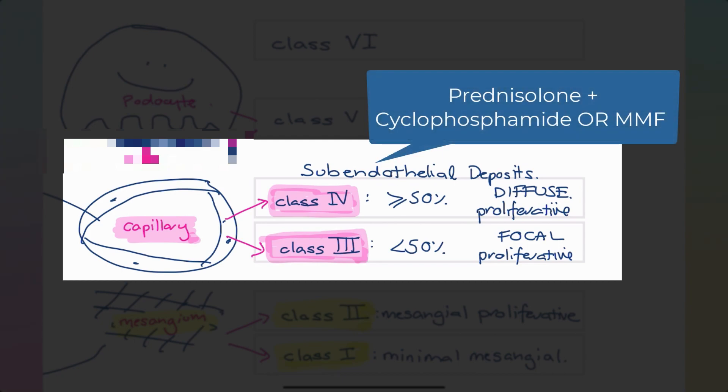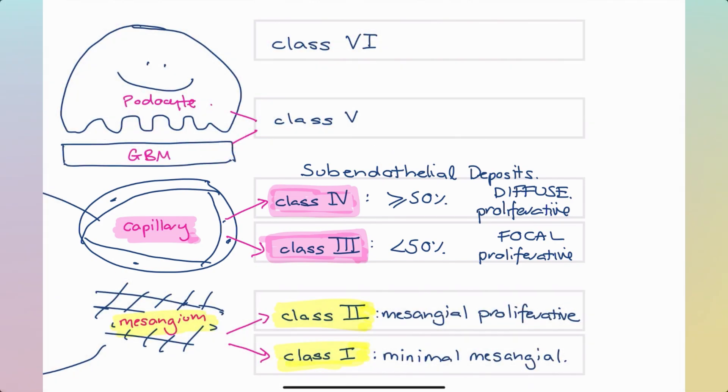Of course, choosing immunosuppression depends on the individual, but it usually looks something like corticosteroids plus cyclophosphamide or mycophenolate. So corticosteroids are always there, and then either cyclophosphamide or mycophenolate depending on how severe and other factors such as fertility concerns.